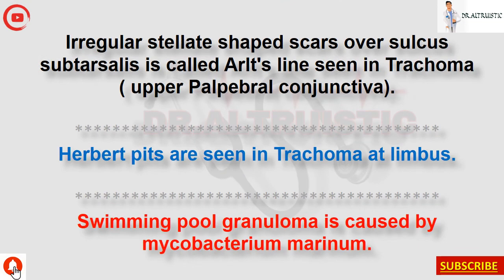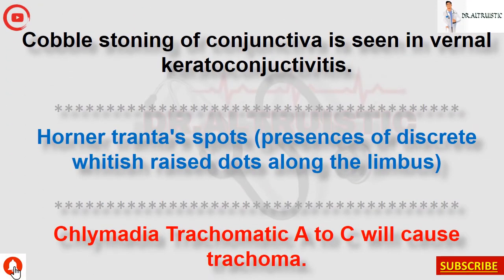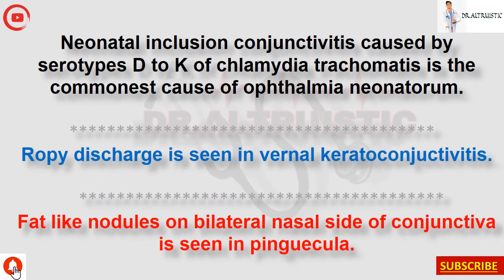Irregular stellate-shaped scars over sulcus subtarsalis are called Arlt's lines, seen in trachoma of the upper palpebral conjunctiva. Herbert pits are seen in trachoma at the limbus. Swimming pool granuloma is caused by Mycobacterium marinum. Cobblestoning of conjunctiva is seen in vernal keratoconjunctivitis. Horner-Trantas spots are discrete whitish raised dots along the limbus. Chlamydia trachomatis A to C causes trachoma. Neonatal inclusion conjunctivitis caused by serotypes D to K of Chlamydia trachomatis is the commonest cause of ophthalmia neonatorum. Ropy discharge is seen in vernal keratoconjunctivitis. Fat-like nodules on the bilateral nasal side of the conjunctiva are seen in pinguecula.